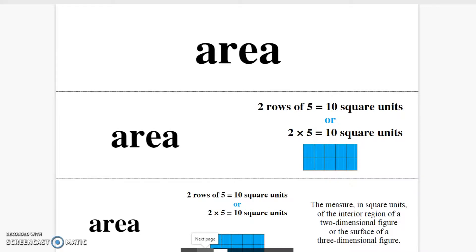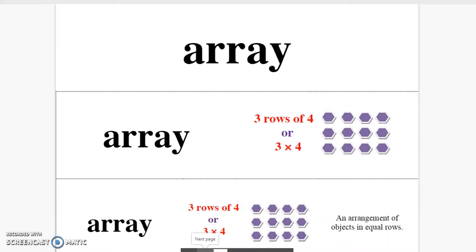Area. The measure in square units of the interior region of a two-dimensional figure or the surface of a three-dimensional figure. Array. Objects arranged in equal rows.